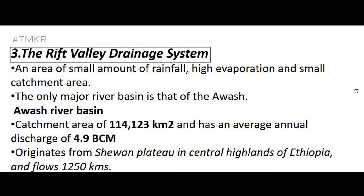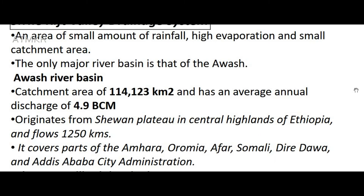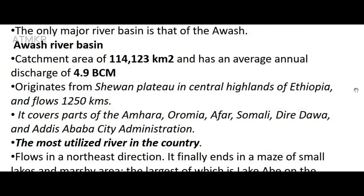The Rift Valley Drainage System is characterized by a small amount of rainfall, high evaporation, and small catchment area. The only major river basin is that of the Awash. The Awash River Basin has a catchment area of 114,123 square kilometers and an average annual discharge of 4.9 BCM. It originates from the Shawan Plateau in the central highlands of Ethiopia and flows 1,250 kilometers. It covers parts of the Amhara, Oromia, Afar, Somali, Dire Dawa, and Addis Ababa city administration areas.